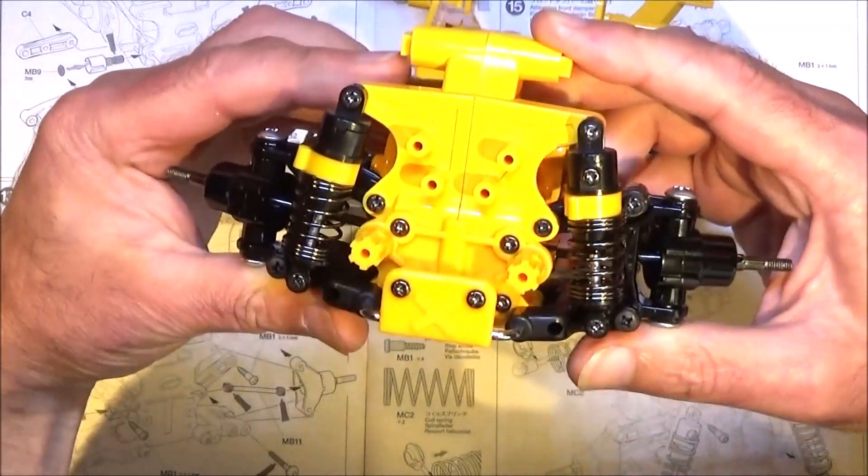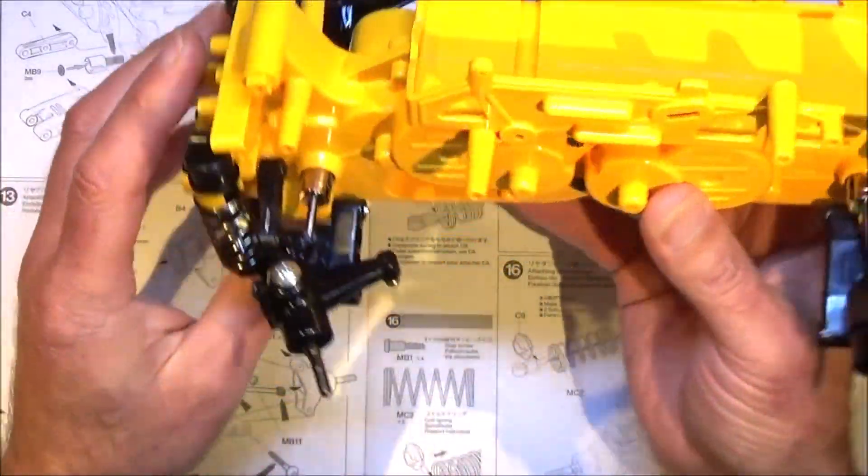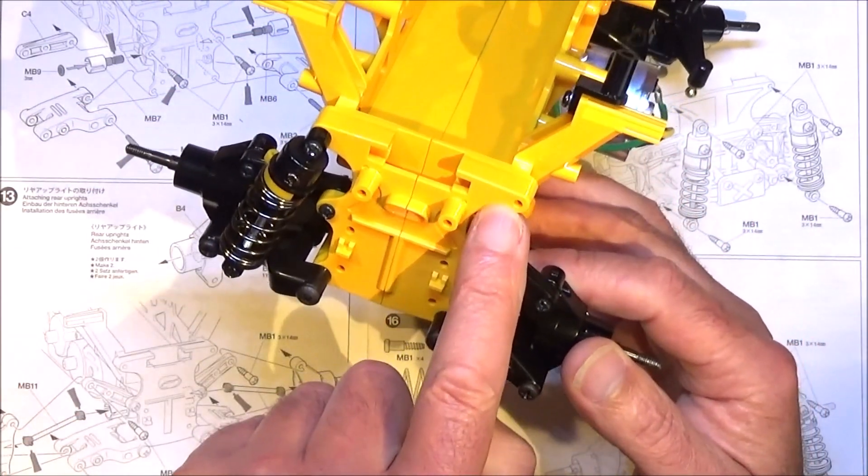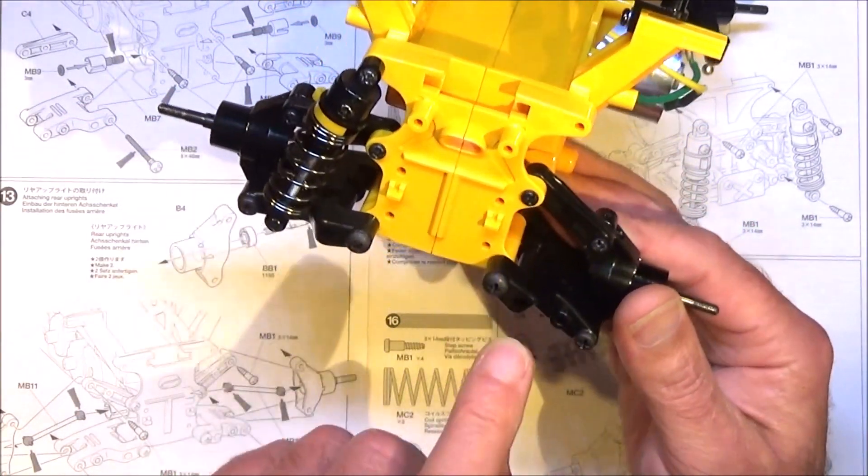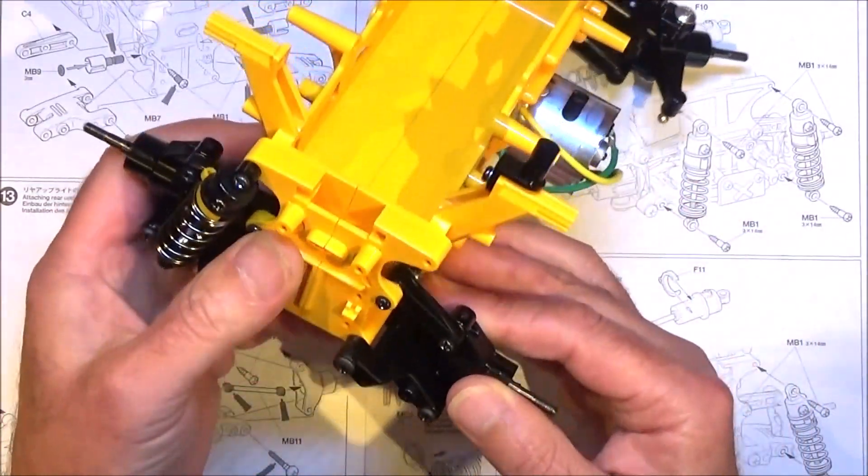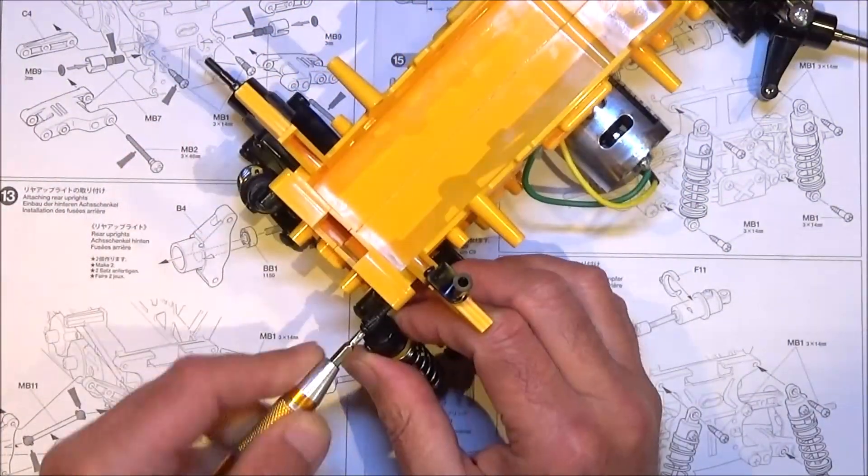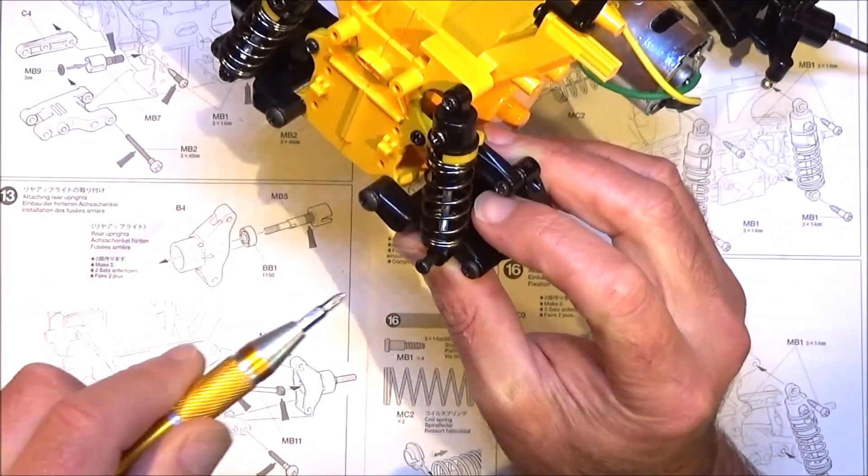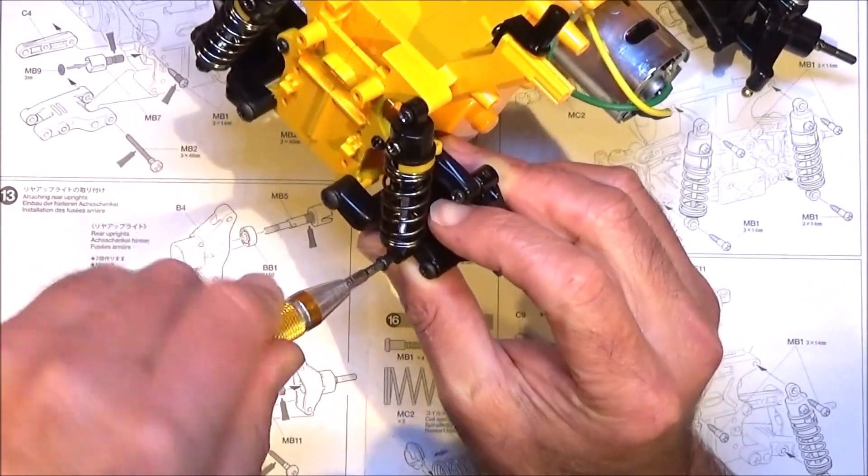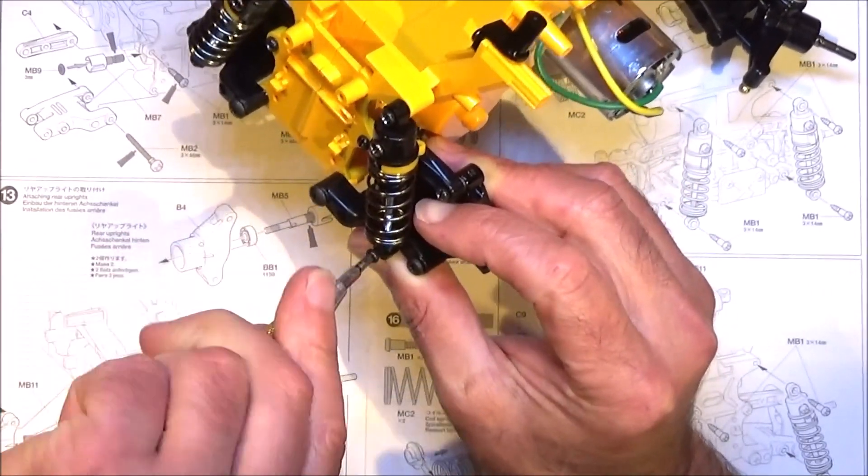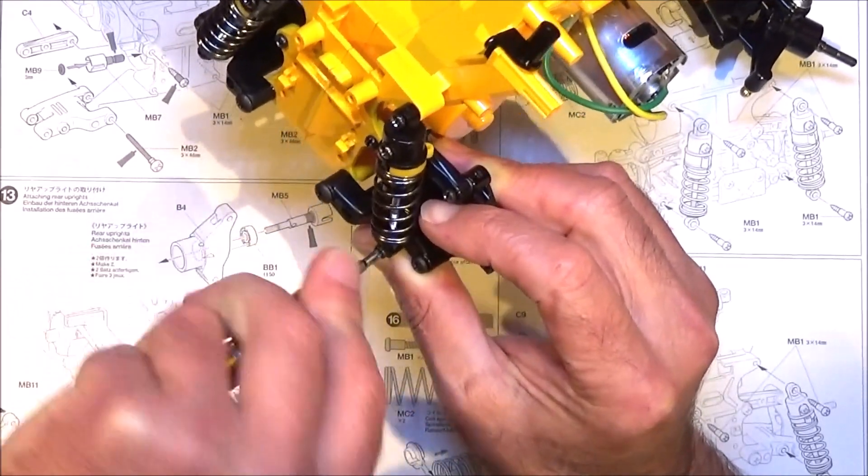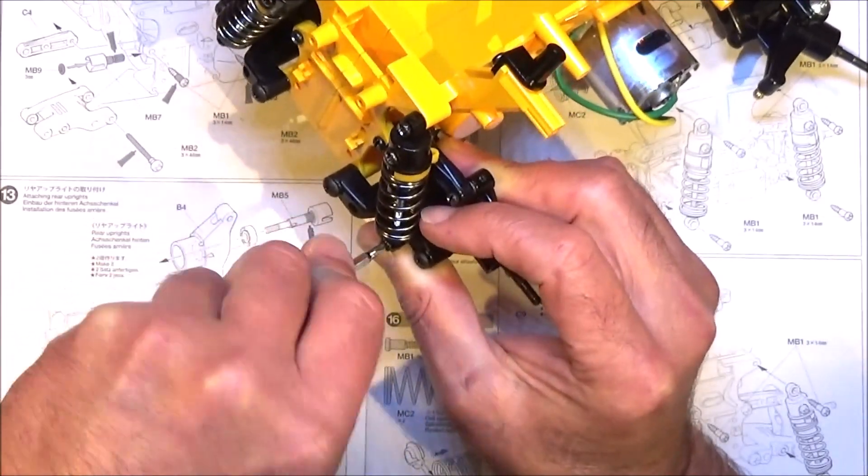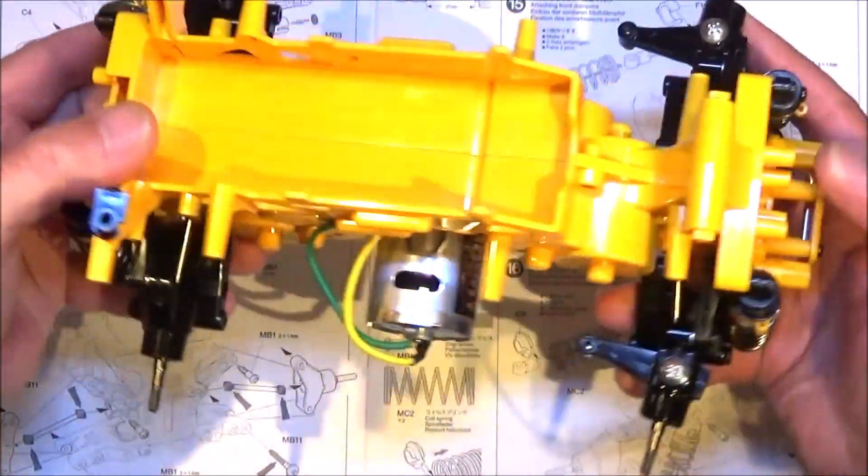The bottom one locates into the lower wishbone or A-arm. That's the front ones mounted. Onto step 16, the rears. Again it's exactly the same. The screw goes in the top there and into the lower wishbone there. When you're doing these bottom ones up into the wishbones, make sure you don't go too mad tightening them up because it is really soft plastic that we're screwing into.